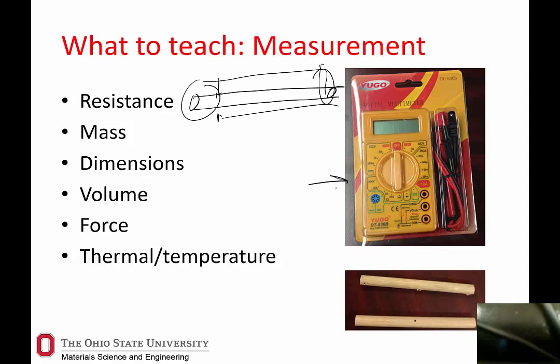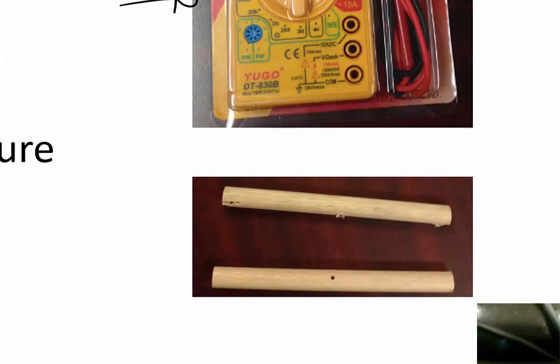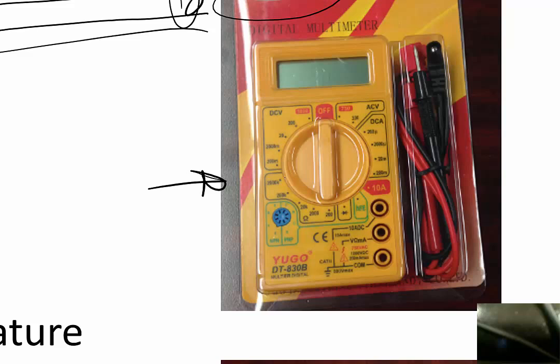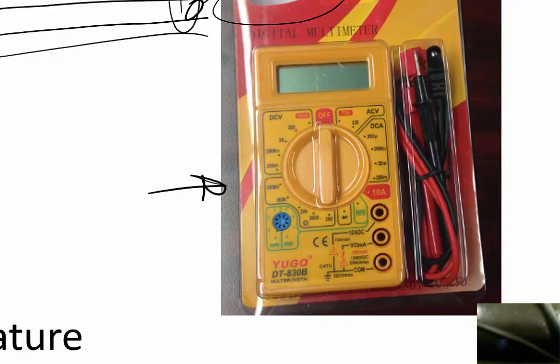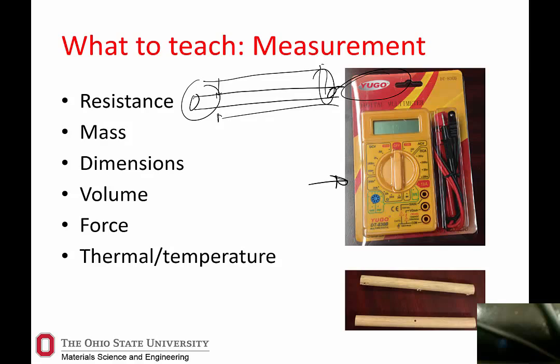To measure resistance, we went out and splurged — we got the very best multimeter you can get for under about seven dollars at Harbor Freight. You just set it to resistance measurements using the ohm symbol, find the appropriate setting at 200 ohms maximum, and it gives you a reading. It's just that simple. Later we can apply known voltages and measure currents, but this gives you resistance right out of the box. You can also measure mass, volume, and use mass over volume for density, and measure dimensions and force.